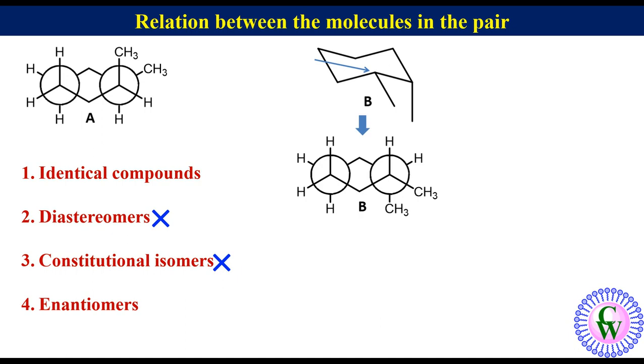Now, we can see that B is still not drawn in the same orientation as A. If we rotate this Newman projection 180 degrees through this axis, it will bring B also in the same orientation as A.